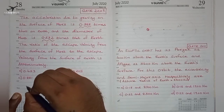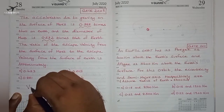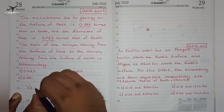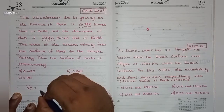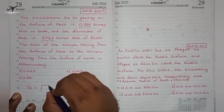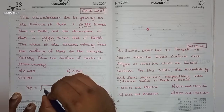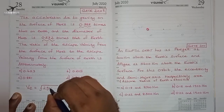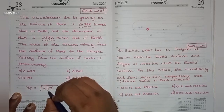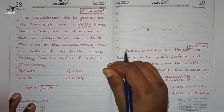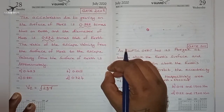To find out the escape velocity, the formula is VE = √(2gR), where g is the acceleration due to gravity and R is the radius of the body — any planet which we are considering.